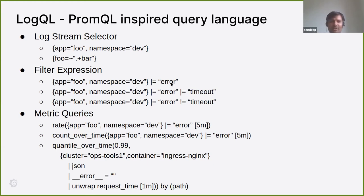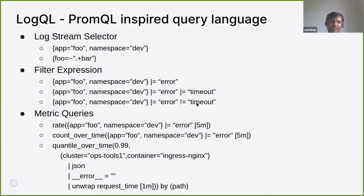Here it would show all the logs which contain 'error' in them, or you can change the filters — querying for logs which contain 'error' and also 'timeout', or all the logs which contain an error without the keyword 'timeout'. We also support metric queries. Using logs, you can build metrics out of them. There are many aggregation functions supported in LogQL — these are just some examples.